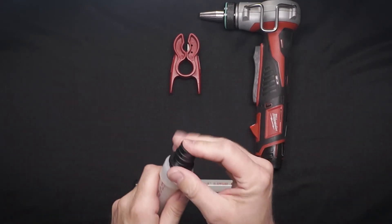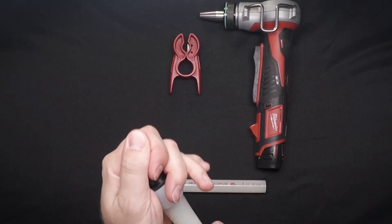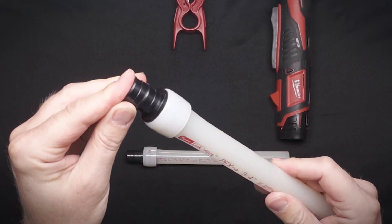Once the PEX is expanded, insert the fitting and hold in place against the shoulder of the PEX ring until it contracts onto the fitting.